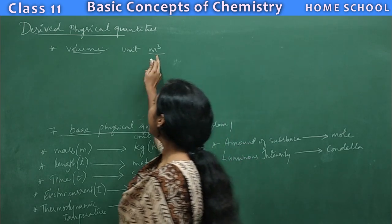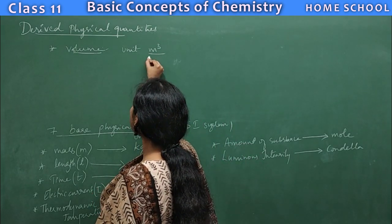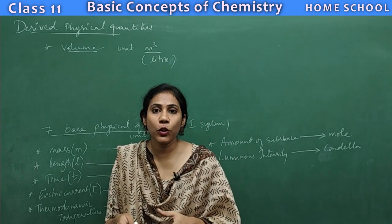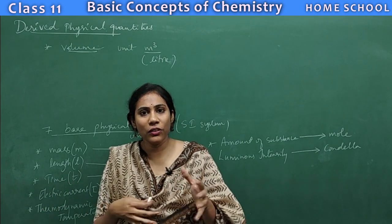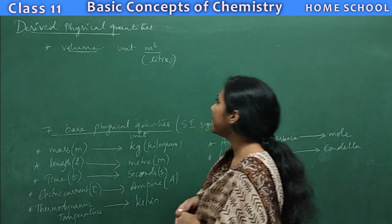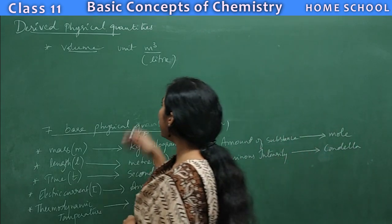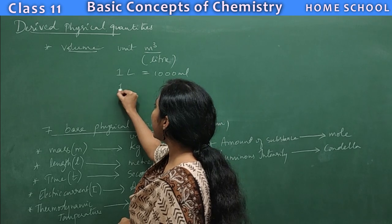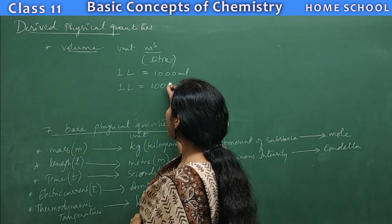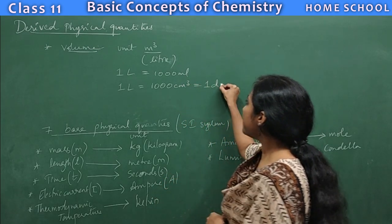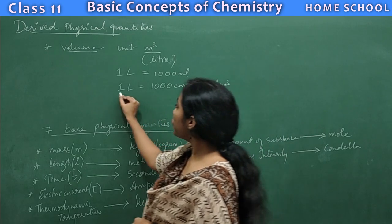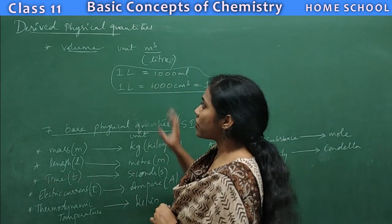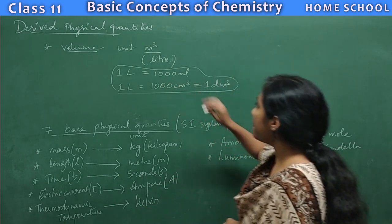The unit of volume is meter cube, but meter cube is not a commonly used unit. Instead we use liter. For example, 10 liters of water and 20 liters of acid — liter is the most commonly used unit here. One liter is equal to 1000 mL, or 1000 cm³, which is equal to 1 dm³ (1 decimeter cube). These conversions will help us during numericals.